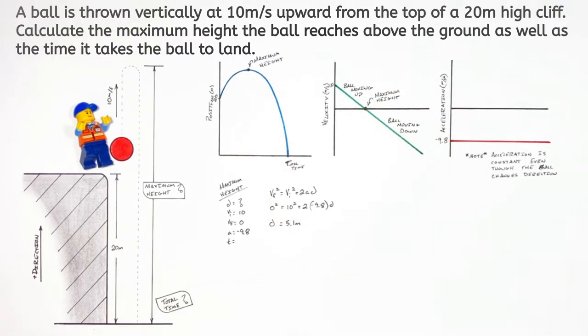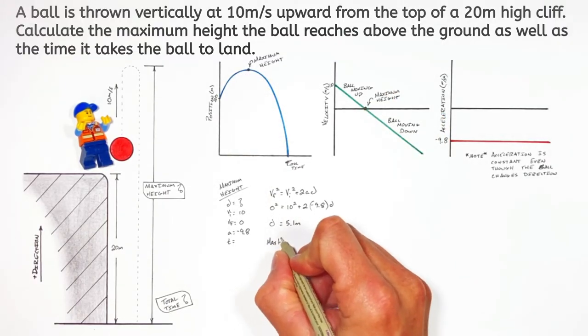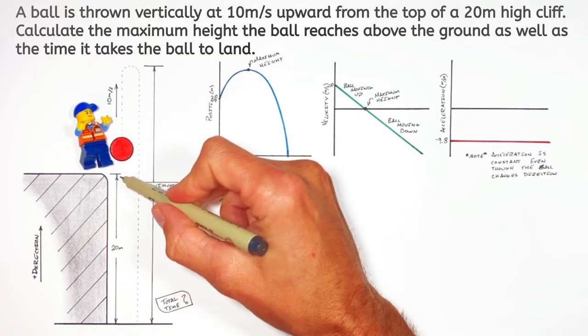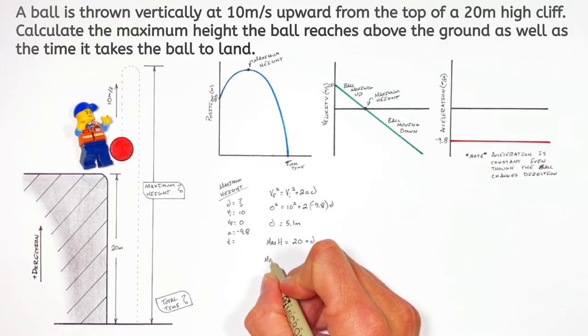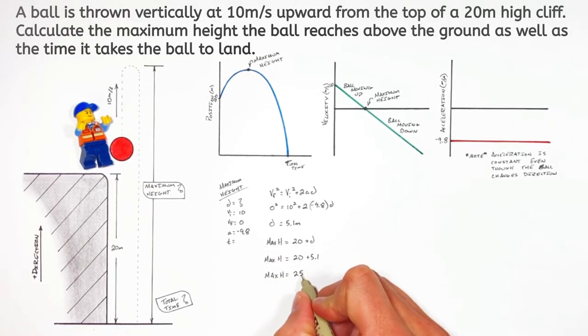Now this displacement of 5.1 meters is the maximum distance the ball reaches above the top of the cliff. So if we want to solve for the maximum height, we need to take the height of the cliff, which is 20, and add it to that upward displacement of 5.1. Giving us a maximum height above the ground of 25.1 meters.